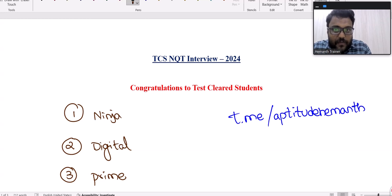A lot of people got upgrades - previously they had Ninja offer, now trying for Digital. Previously had Digital, got Prime. For few students it's a first opportunity as well.